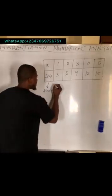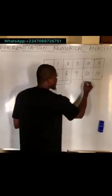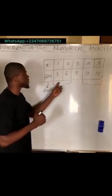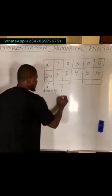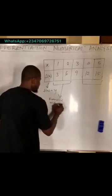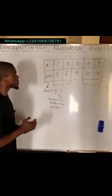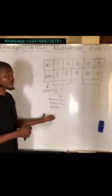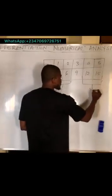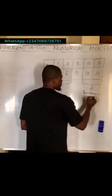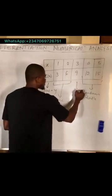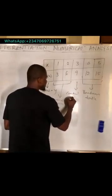We can split this table into three parts: the first two values, the last two values, and the central value. Any value of x that lies between the first two is said to be at the forward of the table — this is called the forward difference table. Any value that lies between four and five is said to be at the back of the table — this is the backward table. And any value that lies in the middle is said to be the central table.